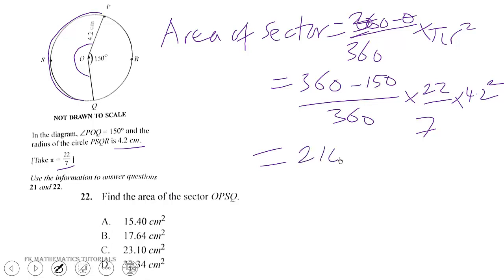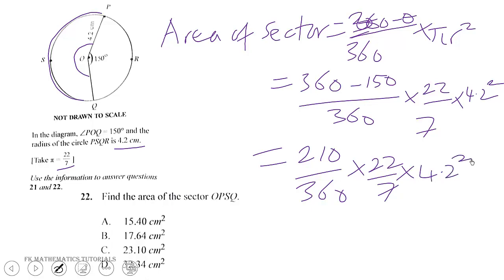This gives us 210 over 360 times 22/7 times 4.2 squared. Working through the calculation, this gives us 32.34 centimeters squared. So the correct answer is D.